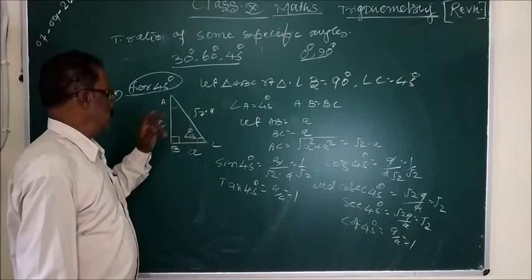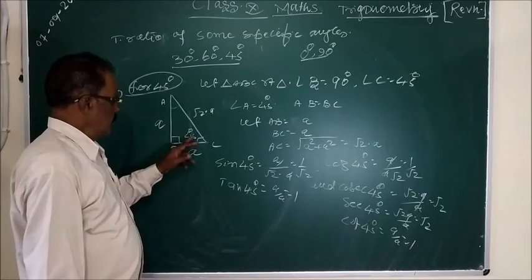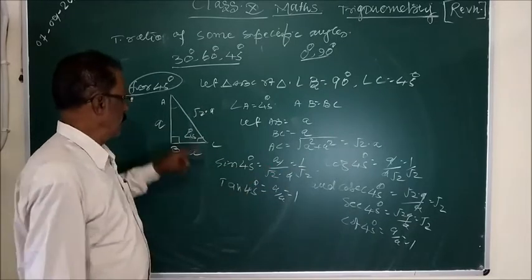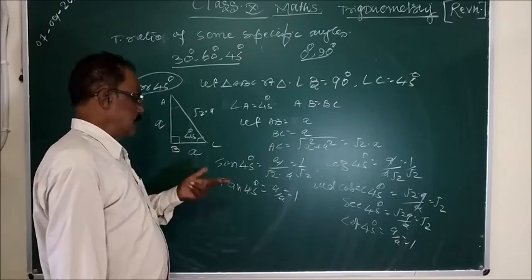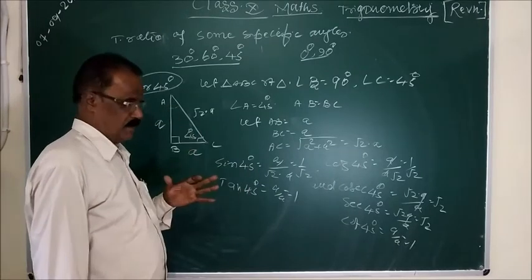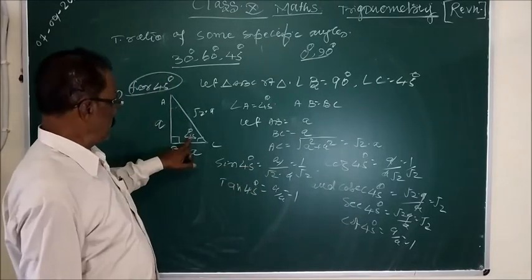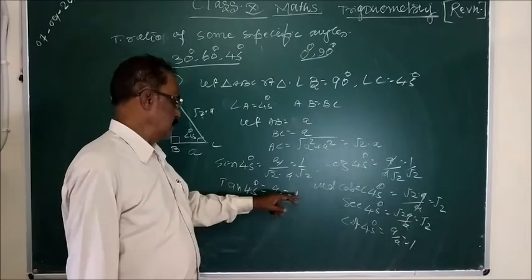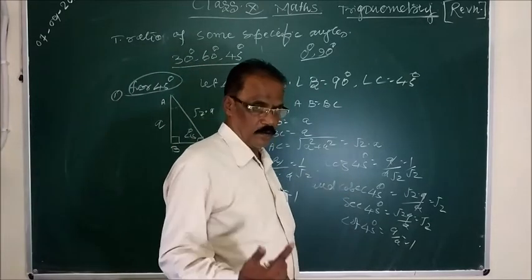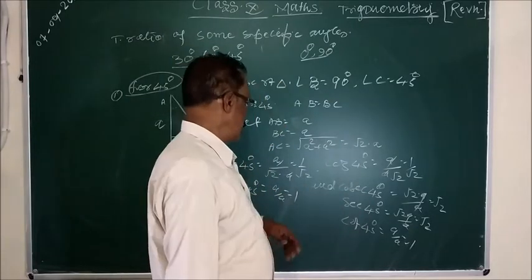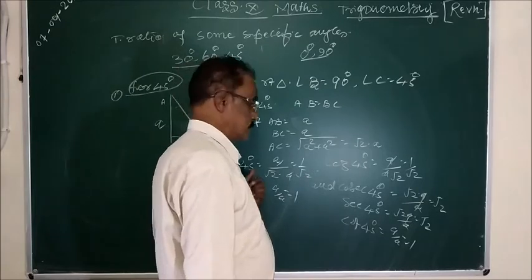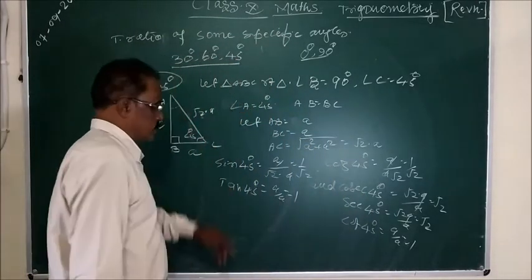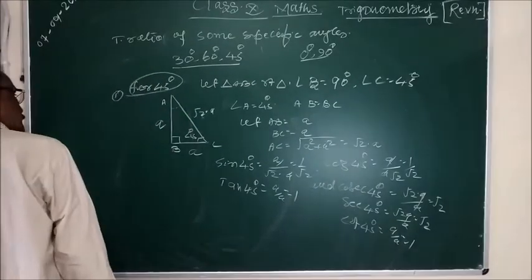For this 45-degree angle, sin 45 degrees equals perpendicular by hypotenuse, which is A by root 2A, equal to 1 by root 2. And if you consider the other 45-degree angle, the same result follows. Cos 45 is also 1 by root 2. Tan 45 is perpendicular by base, which is A by A, equal to 1. And the other three ratios — cosec, sec, and cot — are the reciprocals of sin, cos, and tan respectively. This is the method by which you can find the values for 45 degrees.